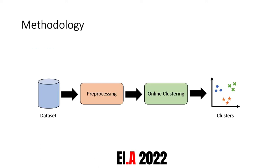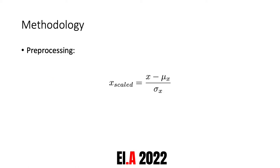The pipeline of our methodology is very simple. We have a preprocessing step where we scale all the features, and then we directly apply the online clustering algorithm to the unknown operations in order to extract relevant patterns. The preprocessing consists only of feature normalization — we subtract the mean from the feature and divide by the standard deviation.